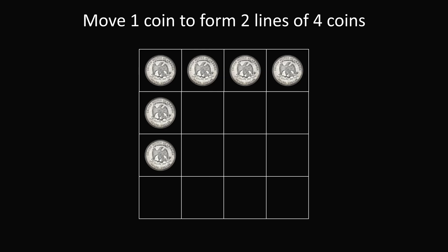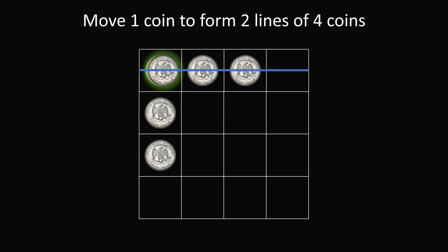The key is to take a coin from the first row and move it on top of the very first coin in the upper left-hand corner. In the first row, we of course have a line containing four coins. And in the first column, we also have a line crossing four coins. This is the amazing solution — move one coin to form two lines of four coins.